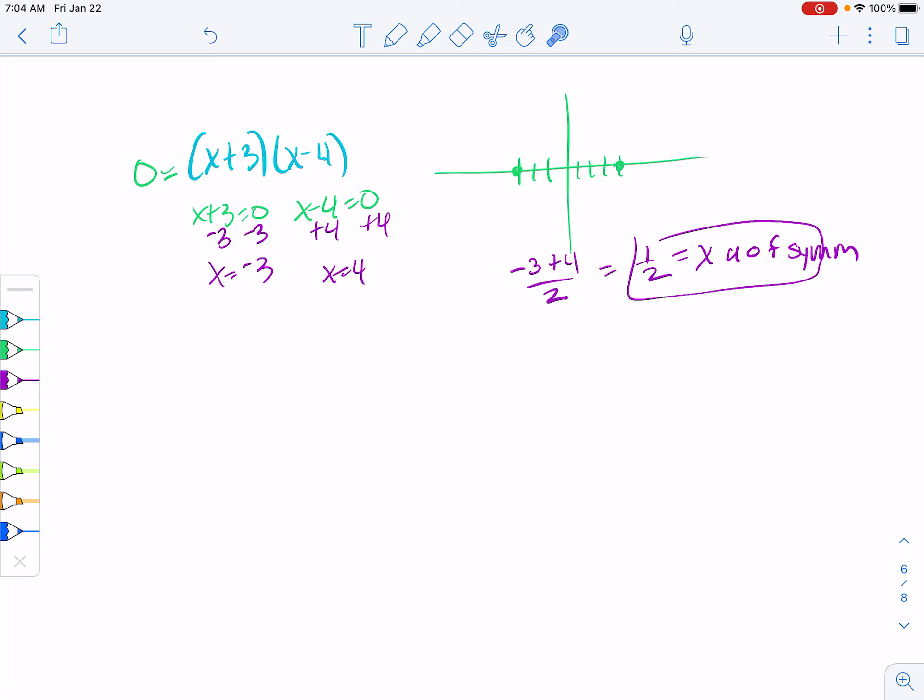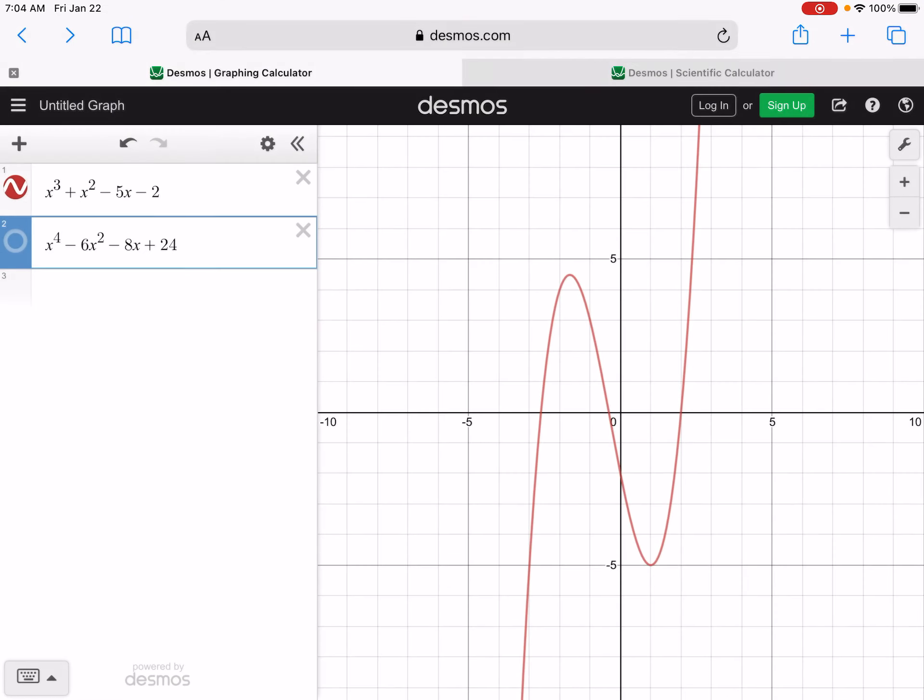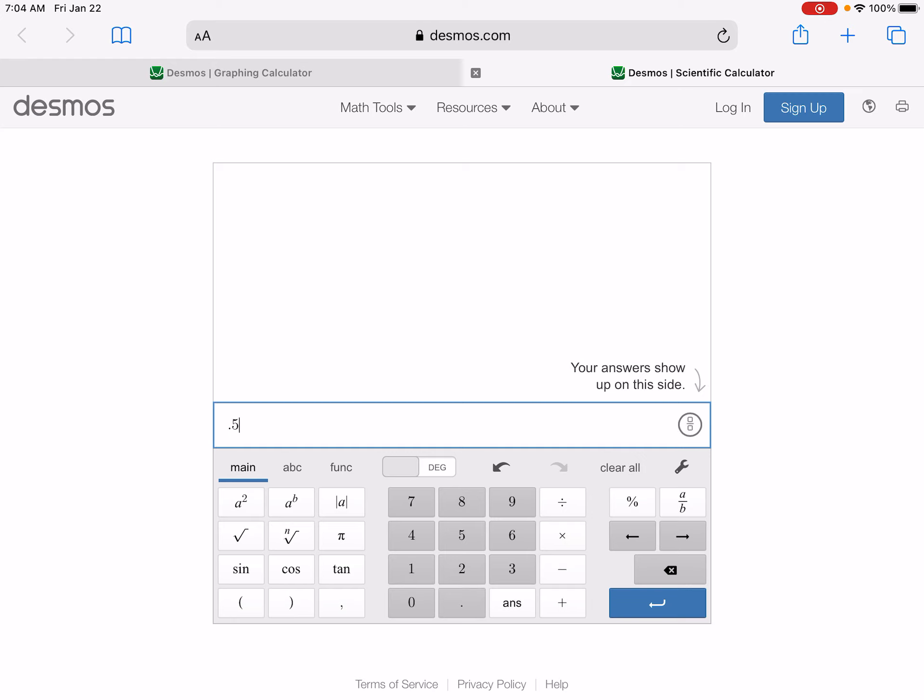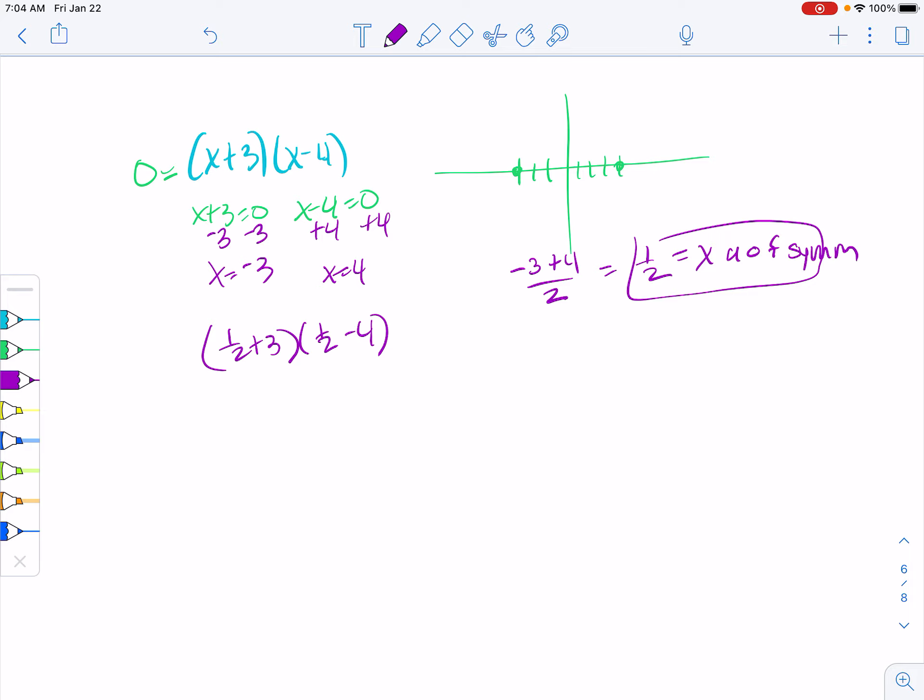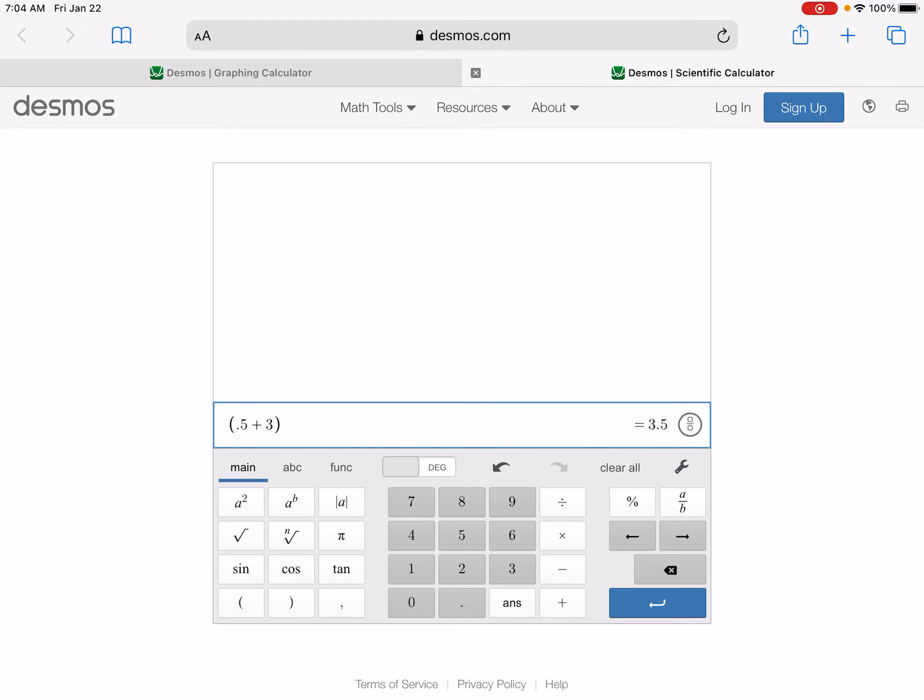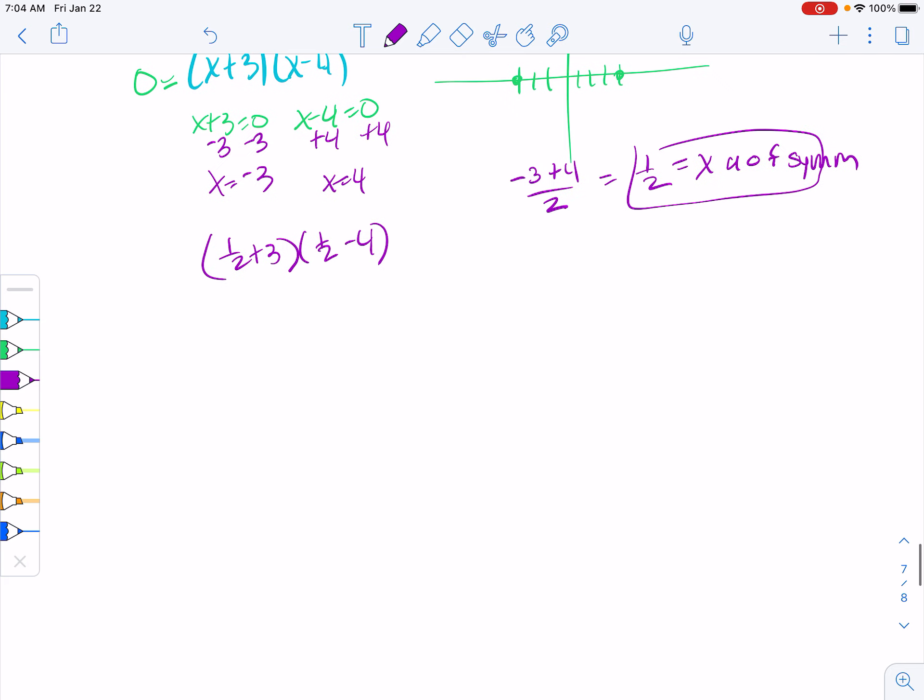If we wanted to find what our y-value of the vertex is, we're going to plug that into here. So we can do a half plus 3 times a half minus 4. If you're not great with fractions, you're welcome to use your calculator. Then that gives us negative 12.25, which you could also write as a fraction of negative 49 fourths. So our vertex is at a half, negative 12.25.